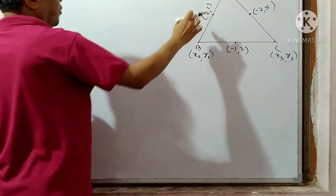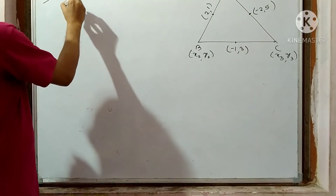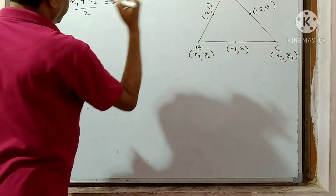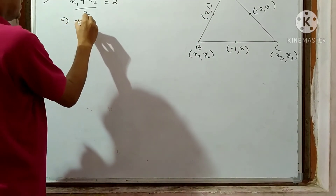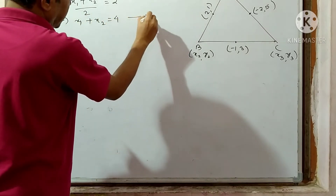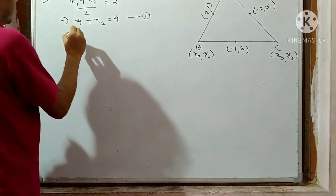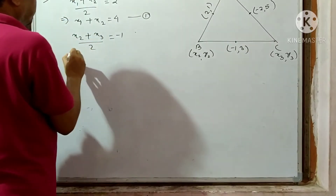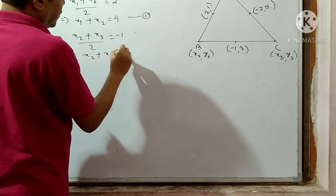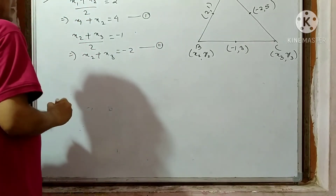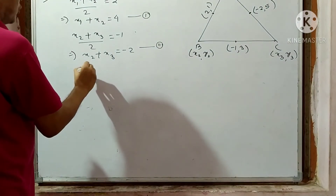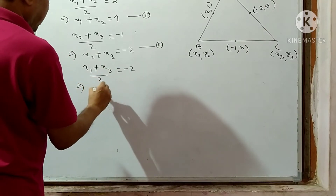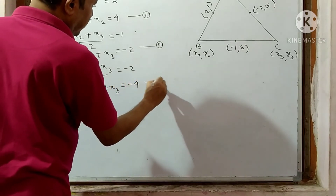As these are midpoints, using the midpoint formula: x1 plus x2 divided by 2 equals 2, which implies x1 plus x2 equals 4 — equation 1. Again, x2 plus x3 divided by 2 equals -1, which implies x2 plus x3 equals -2 — equation 2. And x1 plus x3 divided by 2 equals -2, which implies x1 plus x3 equals -4 — equation 3.